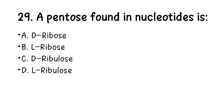Number 29. A pentose — a 5-carbon sugar found in nucleotides. The right answer is D-ribose.